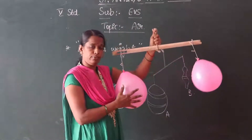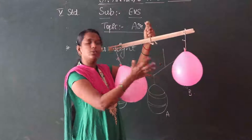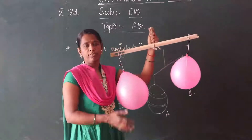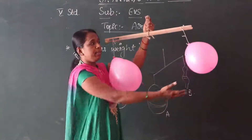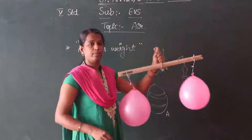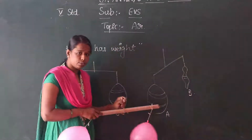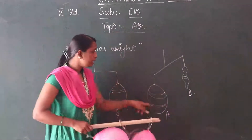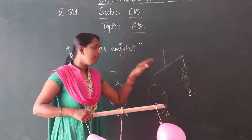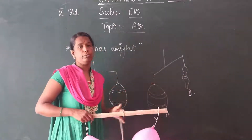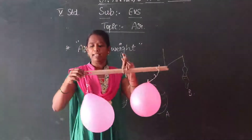So this is the first property of air. When we burst one balloon — for example, this is balloon A and this is balloon B — I will burst balloon A. What happens? As we observe in the figure, balloon A is burst.